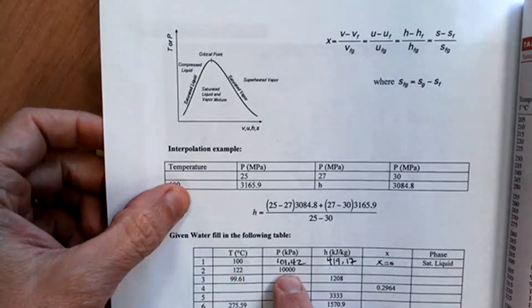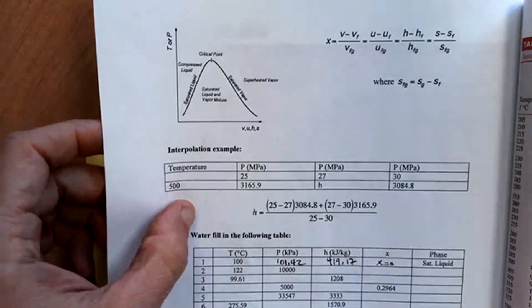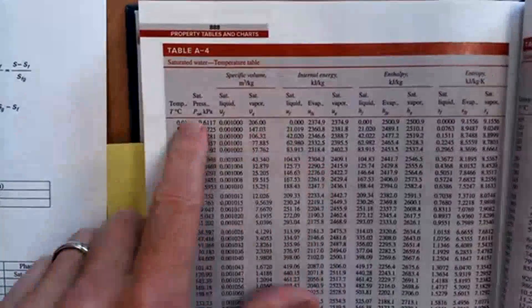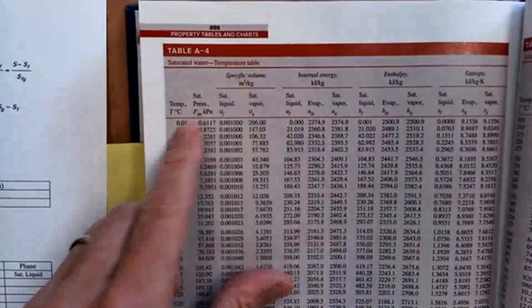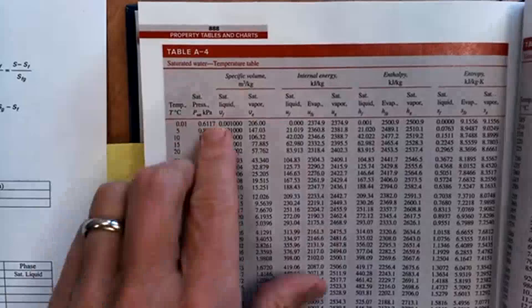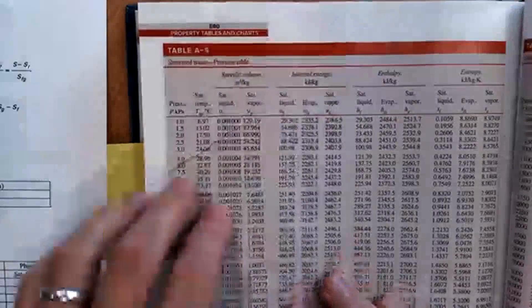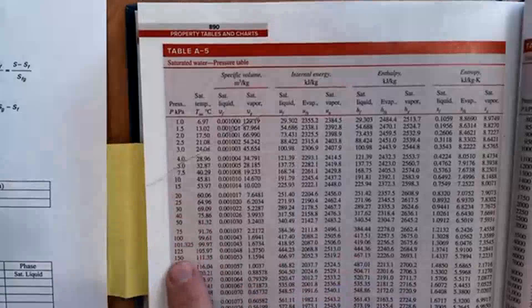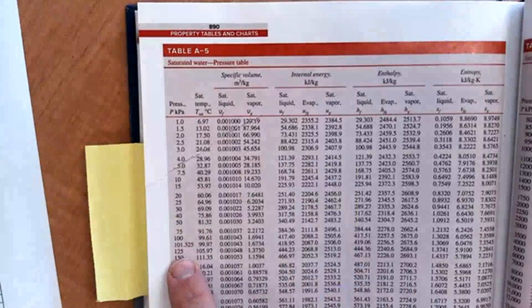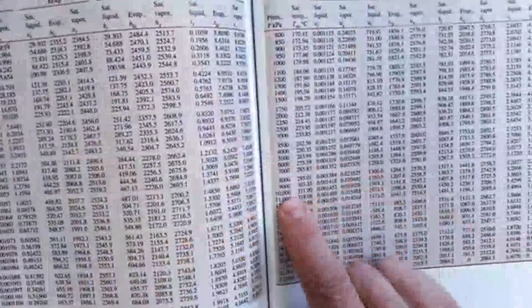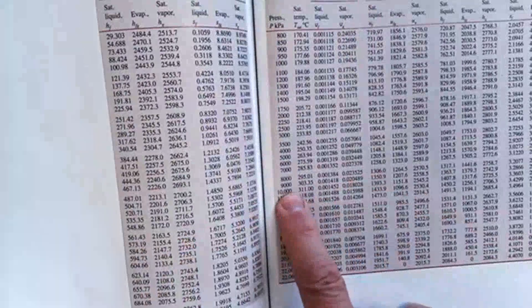I'm going to start with 10,000 only because it's an even number, and I know I can find it exactly on the chart. This is the saturation chart. This column is in temperature. This is in pressure, which is kind of real numbers. If I flip over, I can find them as the integer values. So 10,000 kPa is going to be on the second page. There it is right there, 10,000 kPa.